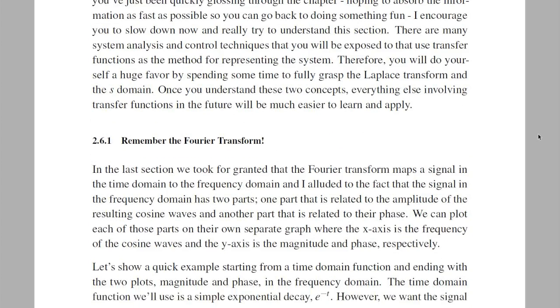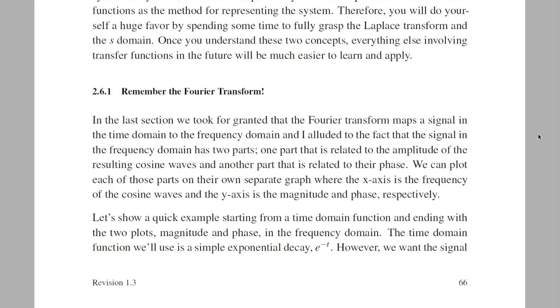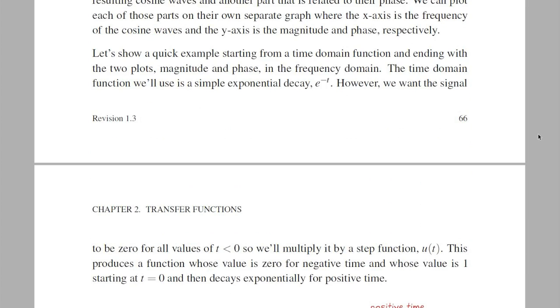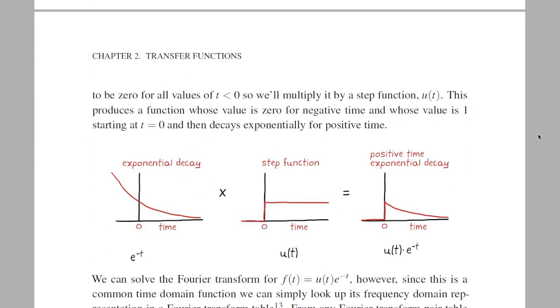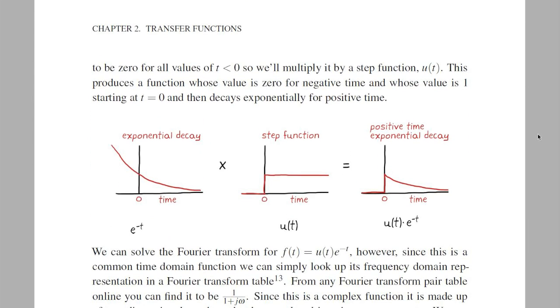An easy way to understand Laplace is by contrasting it with the Fourier transform, but to do that properly, let's review some of the finer Fourier transform points. One thing you should remember is that the Fourier transform maps a signal from the time domain, typically a one-dimensional function of time, to the frequency domain, which is a two-dimensional function, one dimension for the magnitude and one dimension for the phase of the frequency content. We can see this by walking through a simple example.